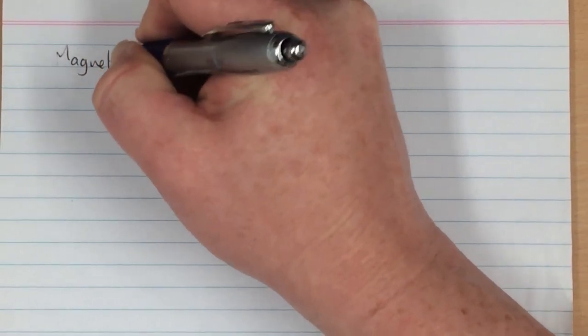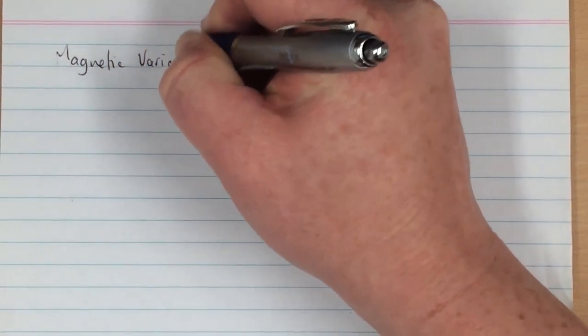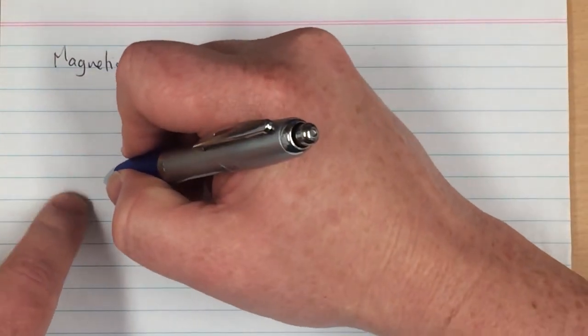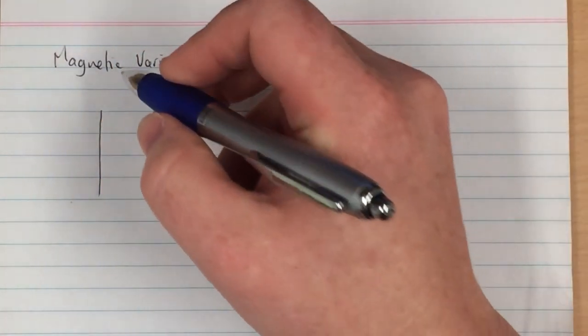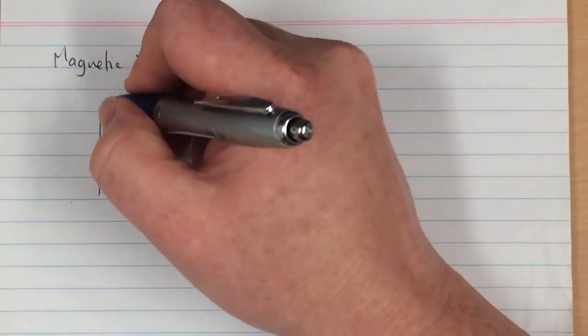In this video we'll be looking at magnetic variation. Magnetic variation is the situation where the direction of magnetic north actually is different to the direction of true north or grid north.